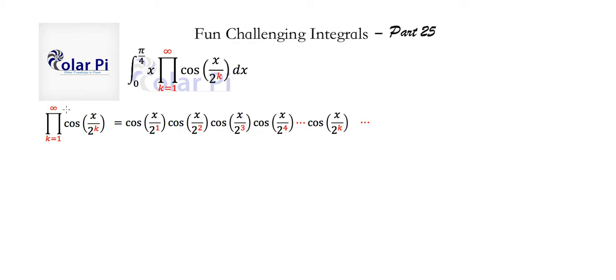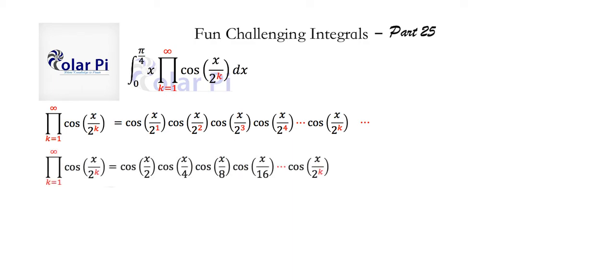It's an infinite product because of that infinity right there. We know that 2 squared is 4, 2 cubed is 8, and so on. So we can write this out, but again we need a dot dot dot at the end because it's an infinite product.